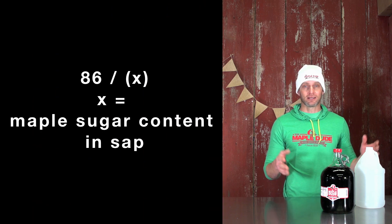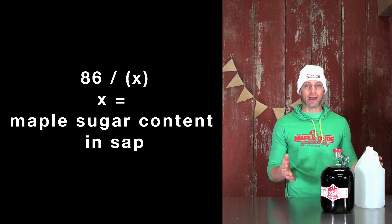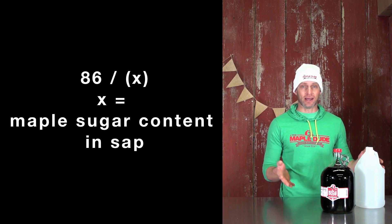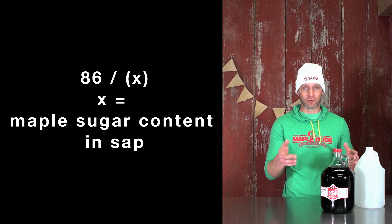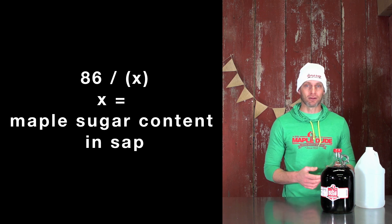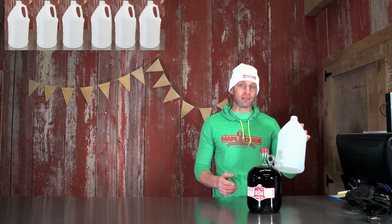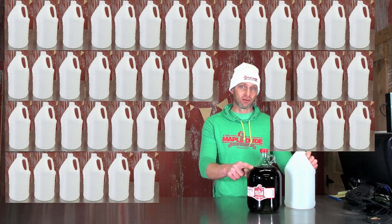So the old Jones Rule of 86 is simply this: 86 divided by X, where X is your maple sugar content of your maple sap. So under the old Jones Rule, if your sap was 2% sugar, it would take 43 of these to make one of these.